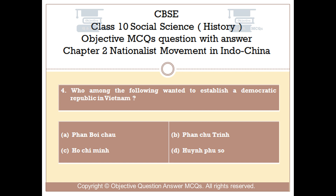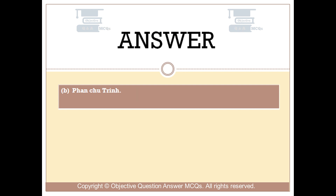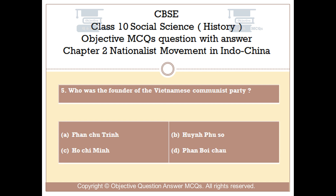Question number 4: Who among the following wanted to establish a democratic republic in Vietnam? Option A: Phan Boi Châu. Option B: Phan Chiu Trinh. Option C: Ho Chi Minh. Option D: Win Phu So. The right answer is Option C: Ho Chi Minh.